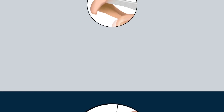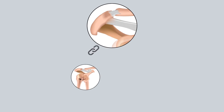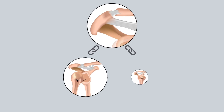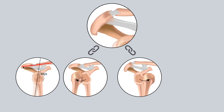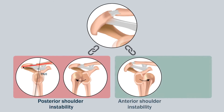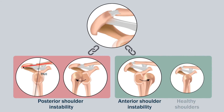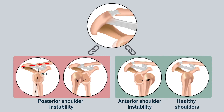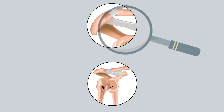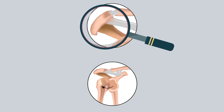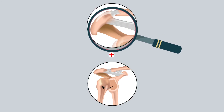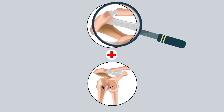Acromial morphology is associated with the type of glenohumeral instability. The acromion is situated higher and oriented more horizontally in posterior than in both anterior instability and in healthy shoulders. These results warrant further study to determine what relevance acromial morphology has in the treatment of posterior instability.